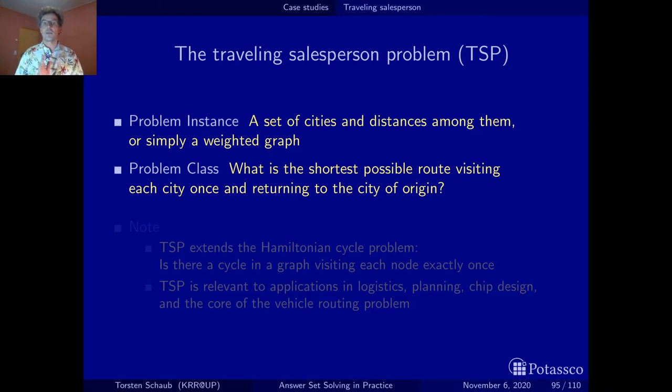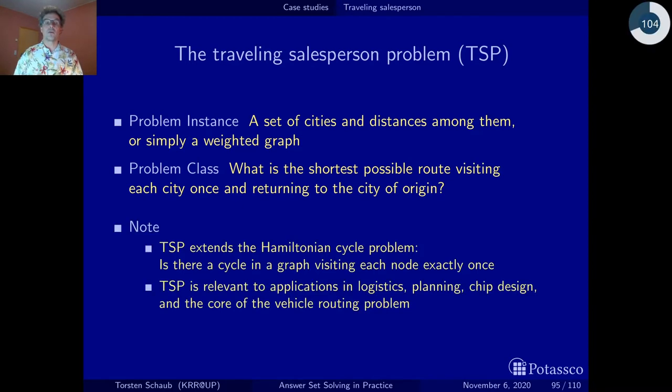This is not only a practically very relevant problem, it actually extends an already well-known problem which is called the Hamiltonian cycle problem. This is the underlying decision problem that has no optimization involved and it's simply about deciding is there a cycle in the graph that visits each node exactly once.